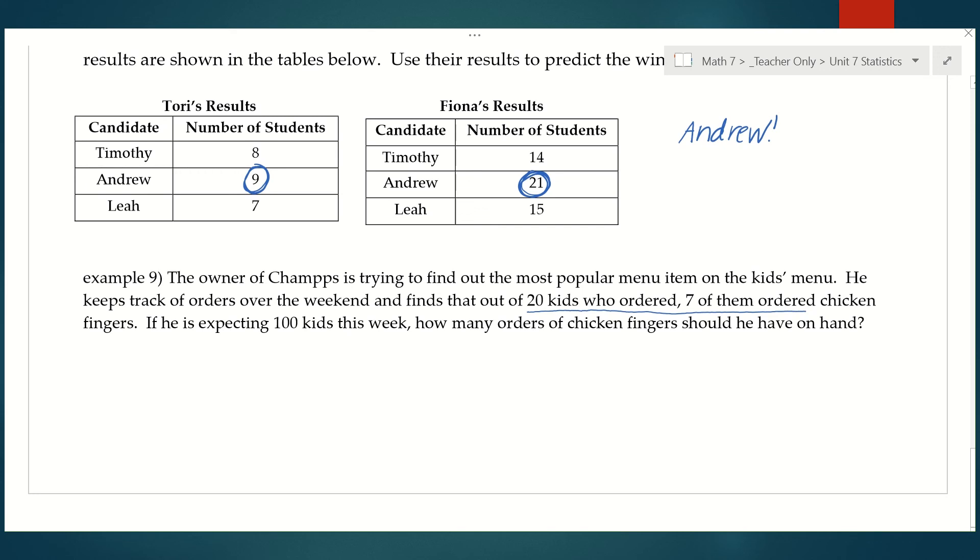And I want to know how many out of 100 should I expect. So 20 times x, seven times 100, divide by 20, and we are going to get 35. So he should have 35 orders on hand.